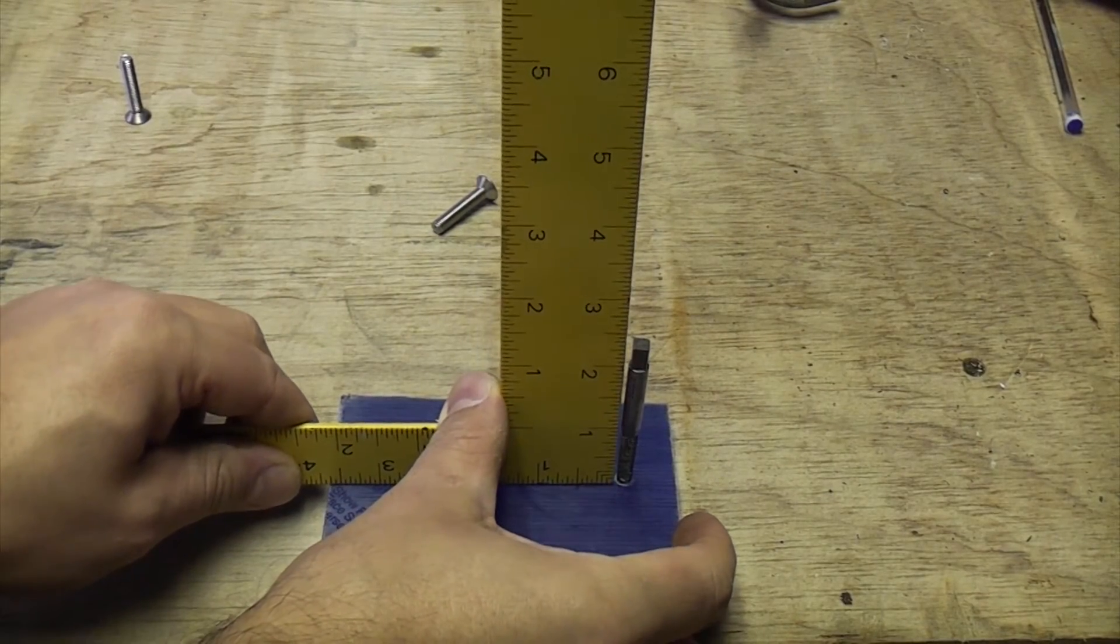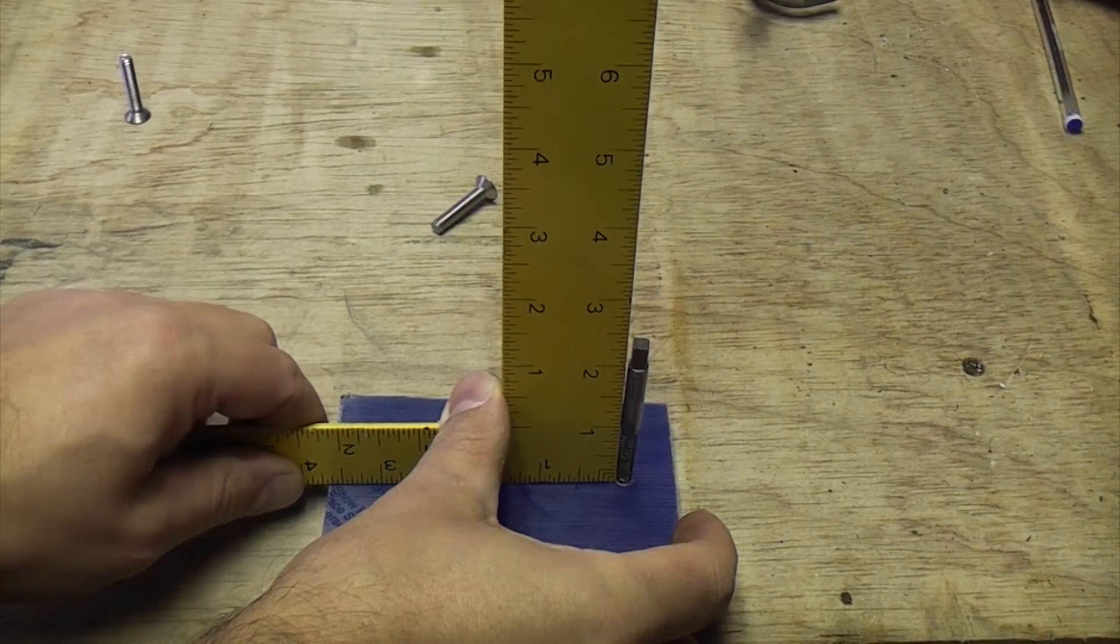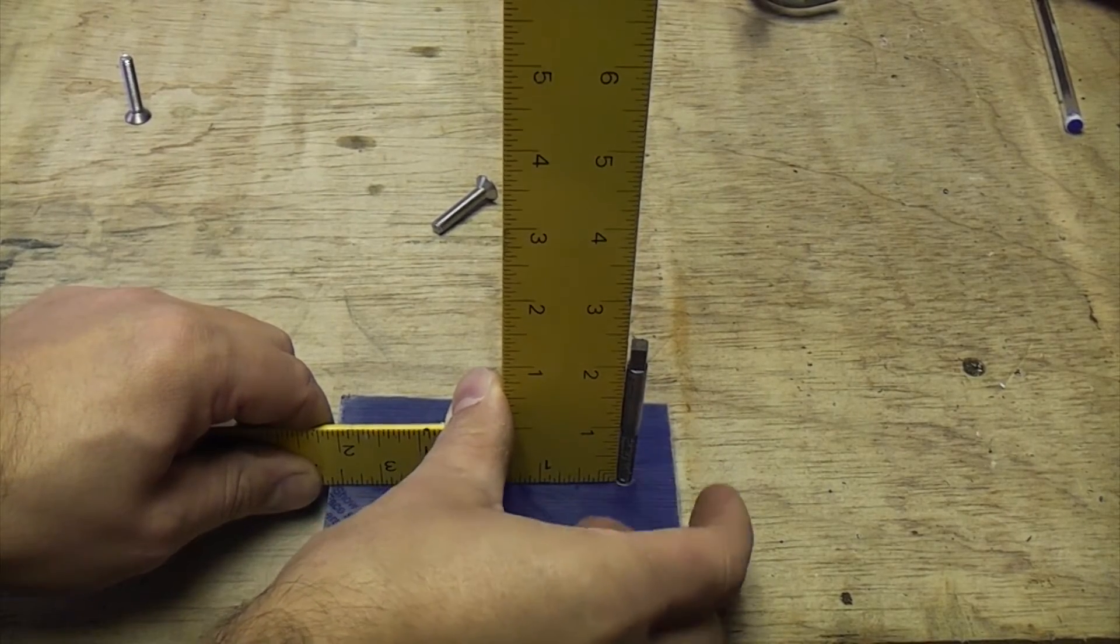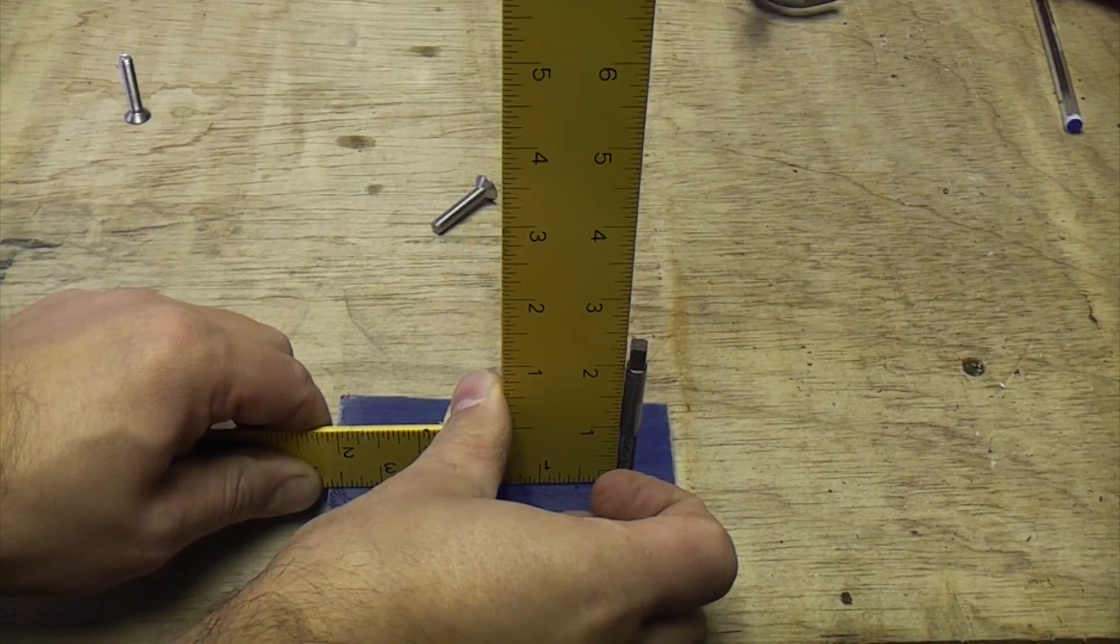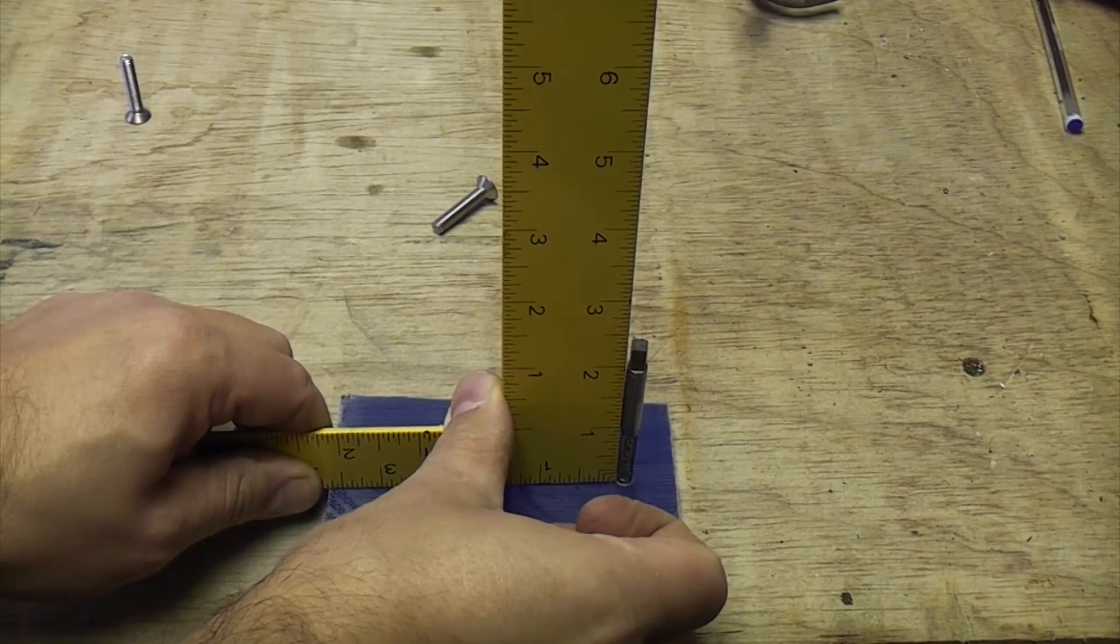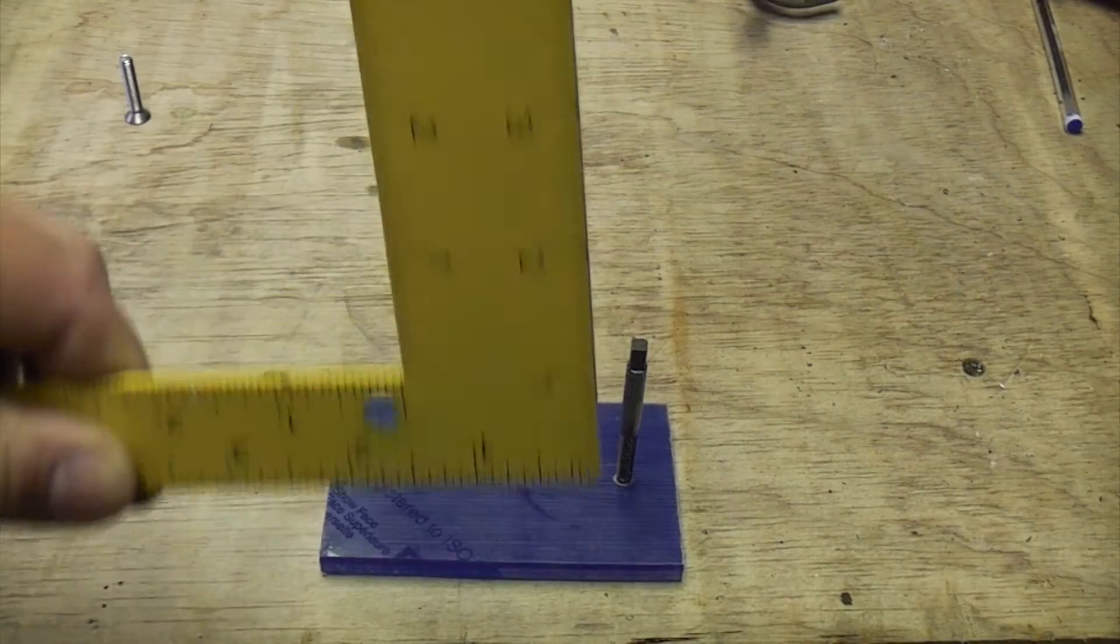Normally you'd use an engineer square for this, but I don't actually have one with me, so I'm just going to use this roofing square. But you can see now that that is virtually straight up using this 90 degree square.